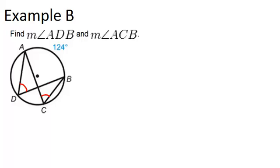And what you need to notice is that each angle intercepts the same arc. Each angle intercepts arc AB. So that means these two angles are going to be congruent because they're both inscribed angles of the same arc.